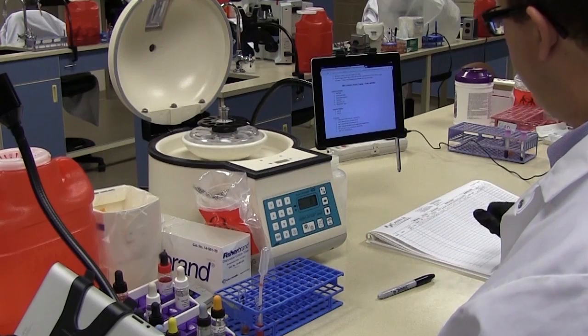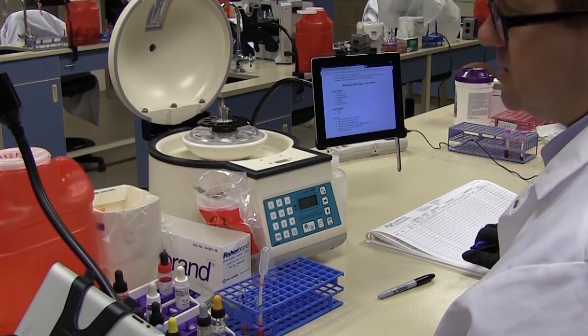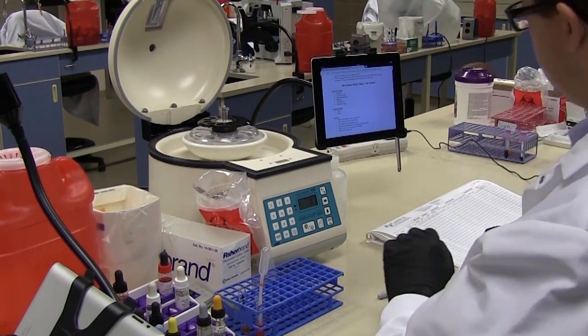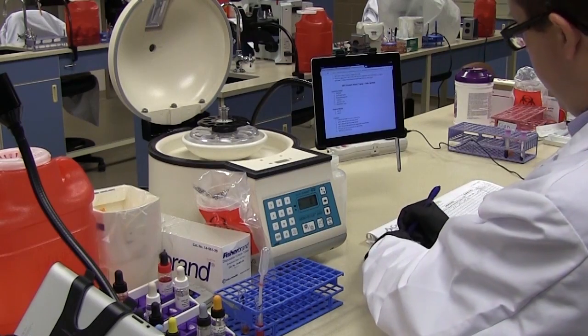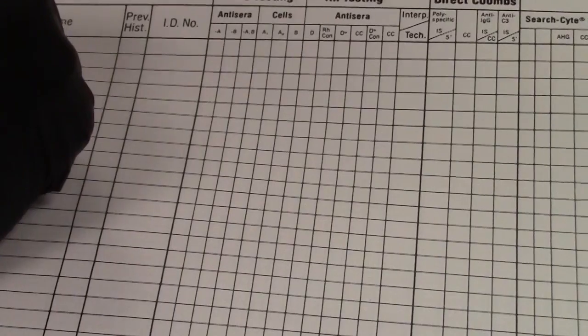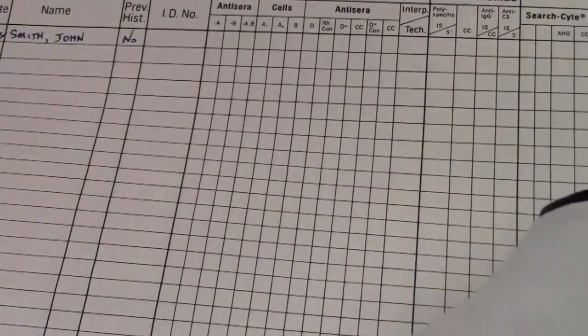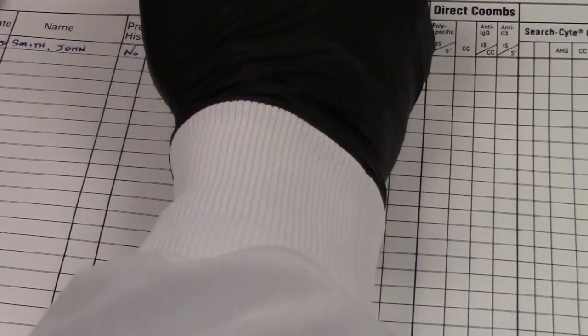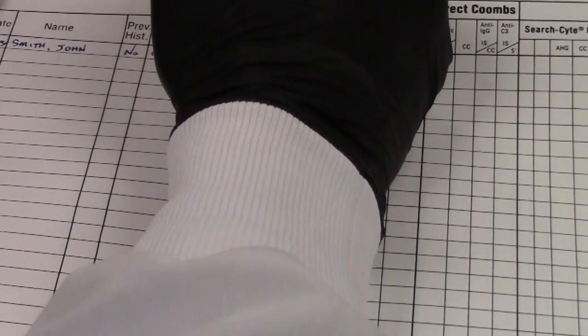So on our results sheet or our results log we're going to go ahead and record the patient information. So today is 10, 31, 14. Our patient is last name Smith, first name John. Previous history, no patient doesn't have any previous history. ID number 1, 2, 3, 4, 5.